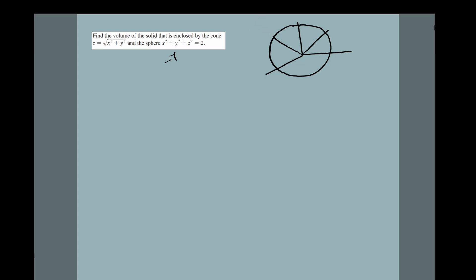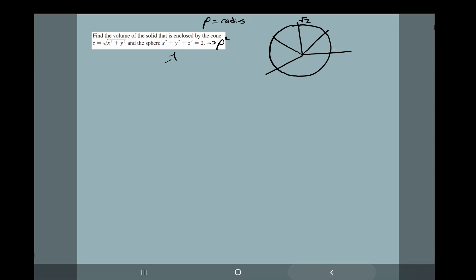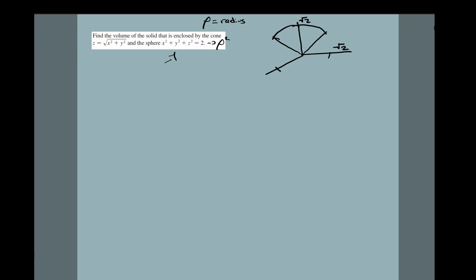To figure out the dimensions of the sphere, we already have the standard sphere equation where 2 equals ρ squared. ρ is our radius, so ρ squared equals 2, and taking the square root of both sides gives us ρ equals √2. That is the radius of the entire sphere. This makes a sort of ice cream cone shape — part cone, part sphere.